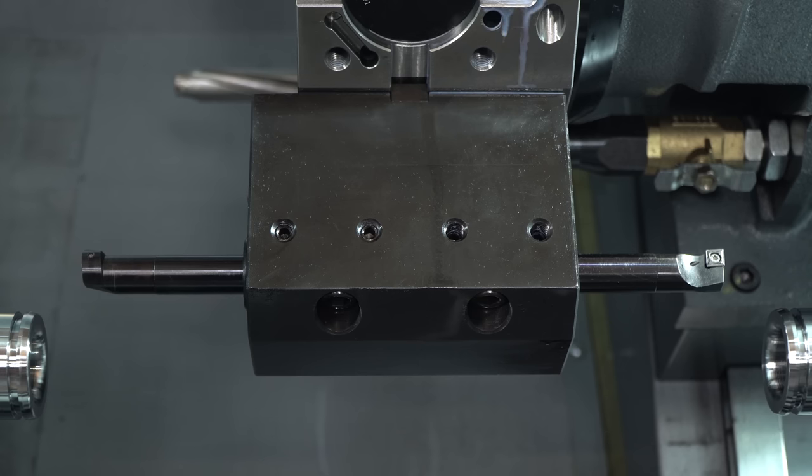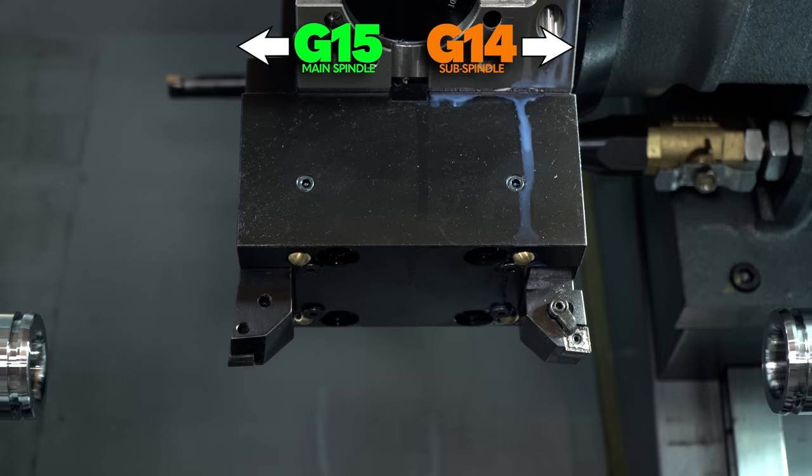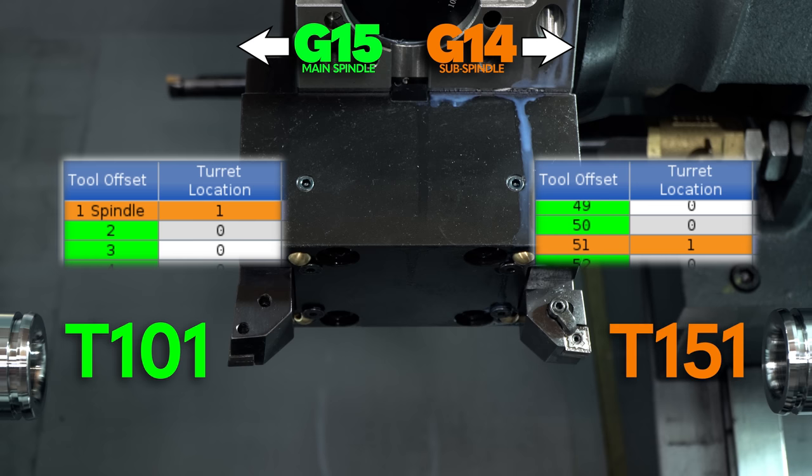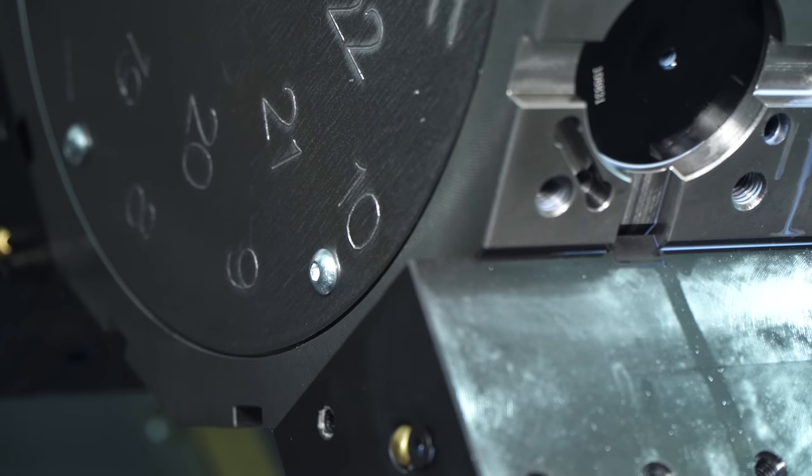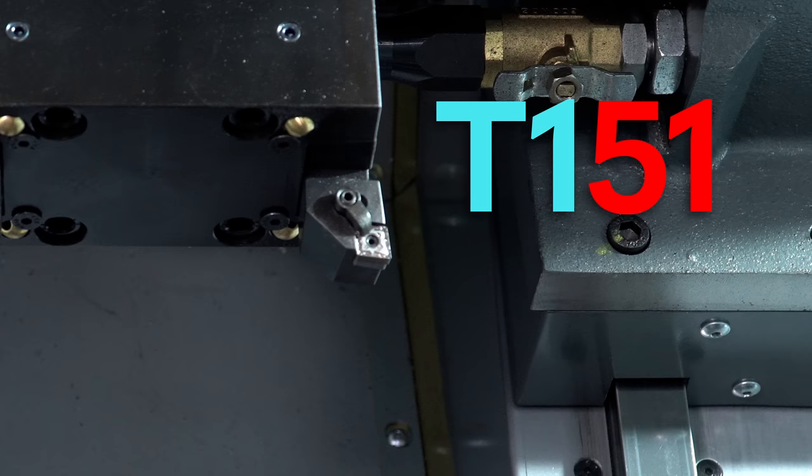Here's what we've decided to do for this particular setup. Our turret position one has two OD turning tools in it. Now we're going to call our G15 tool T101. That's turret position one, tool offset one. Pretty standard. We're going to call our G14 tool T151. That's turret position one, tool offset 51. Why? Well mainly because we just couldn't use offset one. It was already being used by another tool in that position. So we could use something else, anything else. When we call up T151 from within our program, it will bring up turret position one and use tool offset 51.